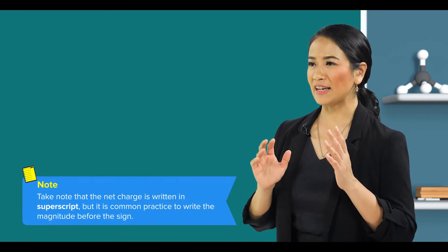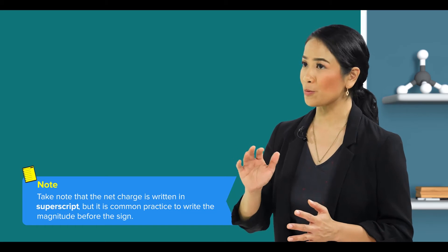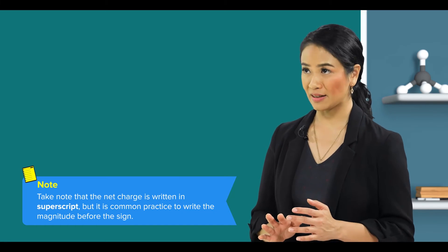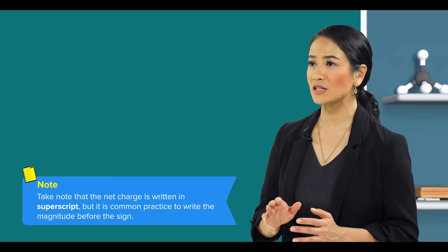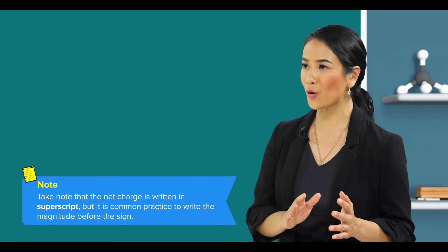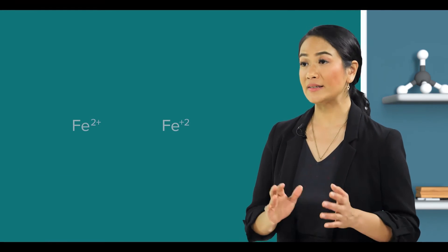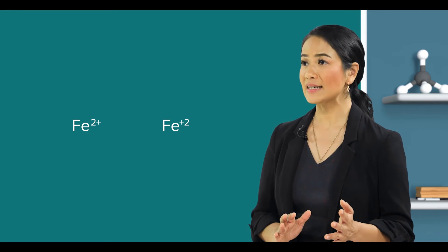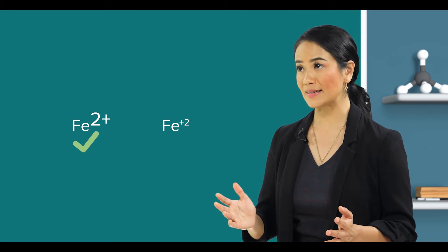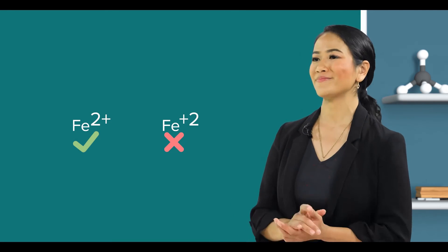Take note that the net charge is written in the superscript, but interestingly, it is common practice to write the magnitude before the sign. So a doubly charged cation is indicated as 2+ instead of +2. Okay.